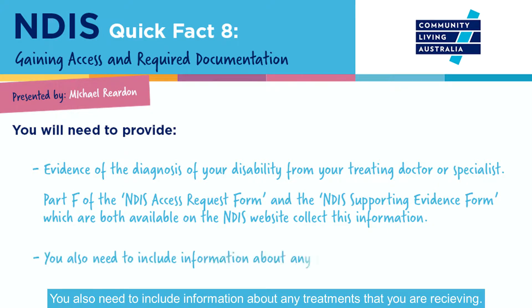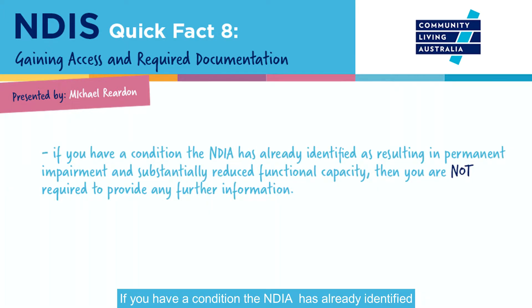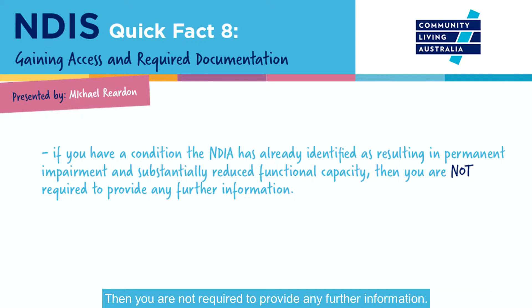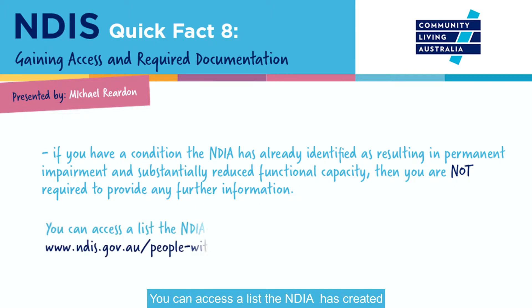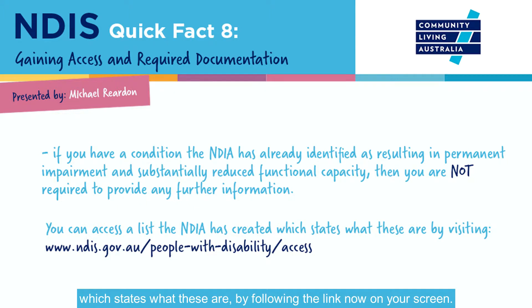You also need to include information about any treatments that you are receiving. If you have a condition the NDIA has already identified as resulting in permanent impairment and substantially reduced functional capacity, then you are not required to provide any further information. You can access a list the NDIA has created which states what these are by following the link on your screen.